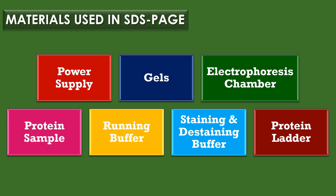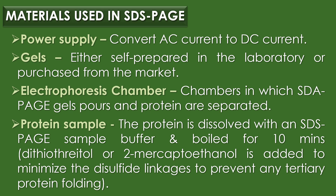Materials used in SDS-PAGE: there are seven major materials used. They are power supply, gels, electrophoresis chamber, protein sample, running buffer, staining and destaining buffer, and finally protein ladder. The first material is power supply, which is used to convert AC current to DC current. Gels are either self-prepared in the laboratory or purchased from the market.